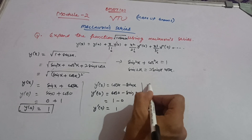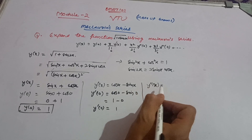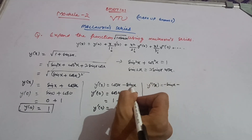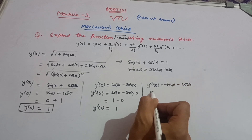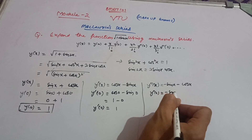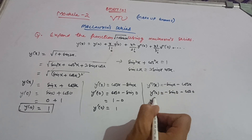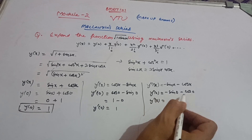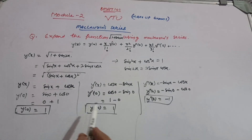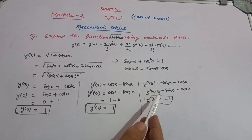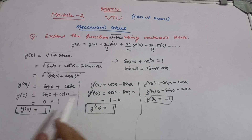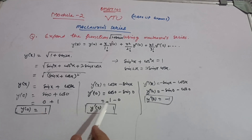For y''(0), differentiate y'(x) = cos x − sin x again: y''(x) = −sin x − cos x. Put x = 0: y''(0) = −sin 0 − cos 0 = 0 − 1 = −1. So y''(0) = −1. You can similarly go for y'''(x) and beyond, depending on how many terms the question asks for. Here I am taking up to three terms.